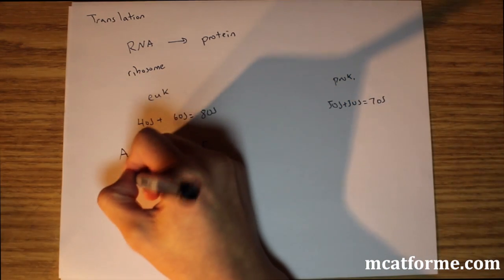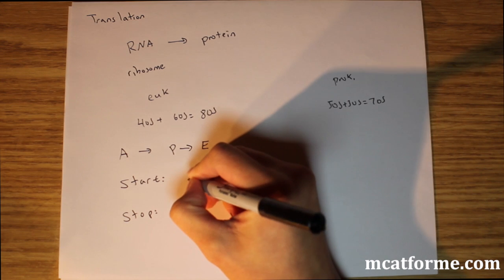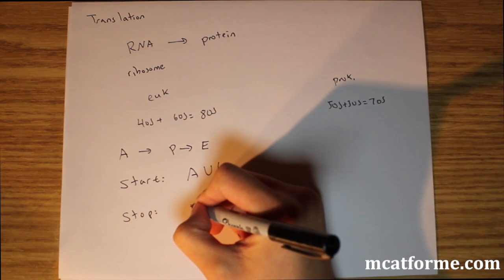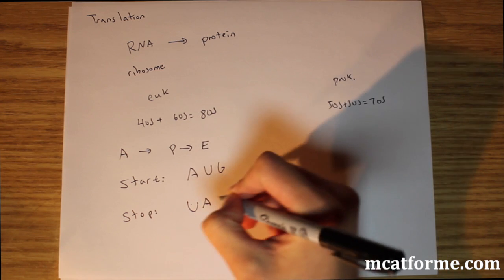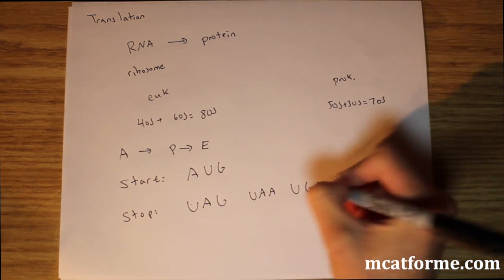So another thing that we'll have to know is the start codons and the stop codons. So the start codons in translation will be AUG. And the stop codons will be UAA, UAG, and UGA.